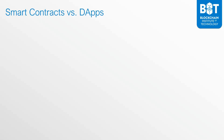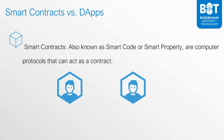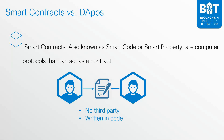Let's start first with a definition of what smart contracts are. Smart contracts, also known as smart code or smart property, are computer protocols that can act as a contract. Let's assume that two people want to enter into an agreement and they need to draft a contract. Instead of needing a lawyer or some broker — any type of third party — to certify and notarize that contract, a smart contract is created in computer code, and recently it's been used in blockchain.